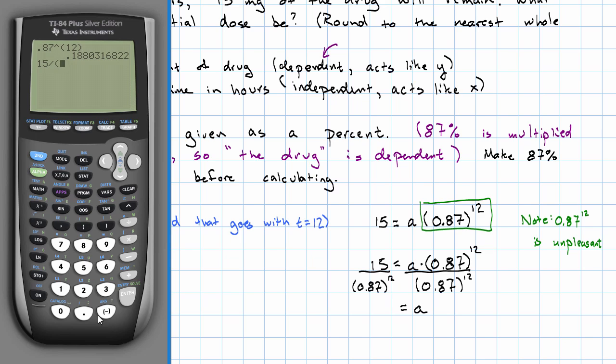15 divided by 0.87 to the 12th. And I get that A is about 80.